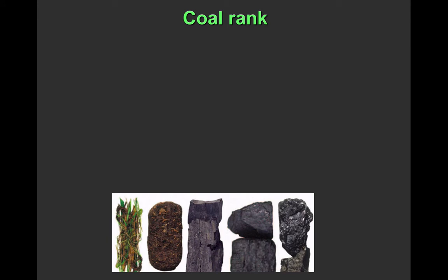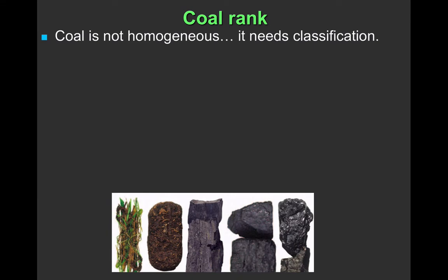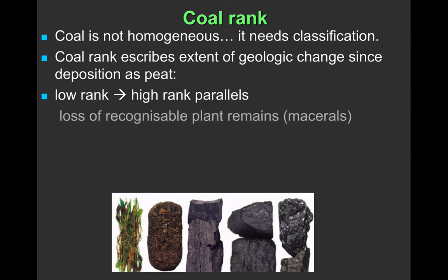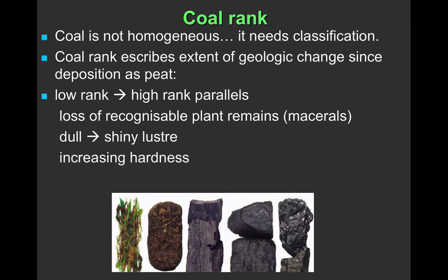These changes are referred to as the rank of the coal — we classify it by the amount of change that's happened. Going from peat to coal means going from a low rank to a higher rank. We'll see a loss of recognisable plant material, turning into what we call macerals — different types of coal material. It'll go from a dull appearance to far more shiny, the hardness will increase, and we'll also see decreasing ash and other impurities within the coal.